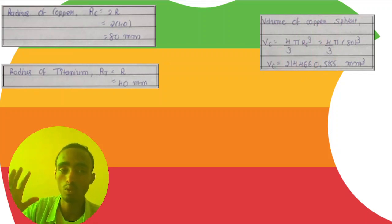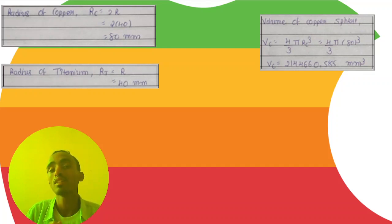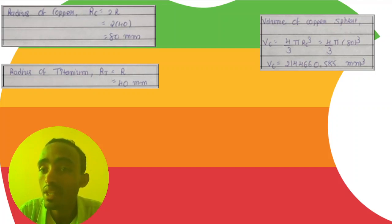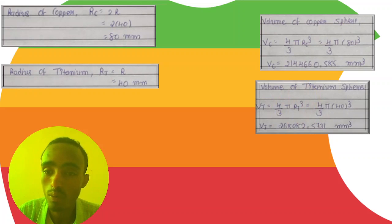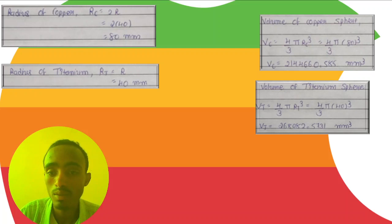From these radii we can calculate the volumes. The volume of the copper sphere is (4/3)π r³, where the radius is 80 millimeters. Substituting this value gives us the volume of the copper sphere. The volume of the titanium sphere is calculated the same way, since the radius of the titanium sphere is 40 millimeters.